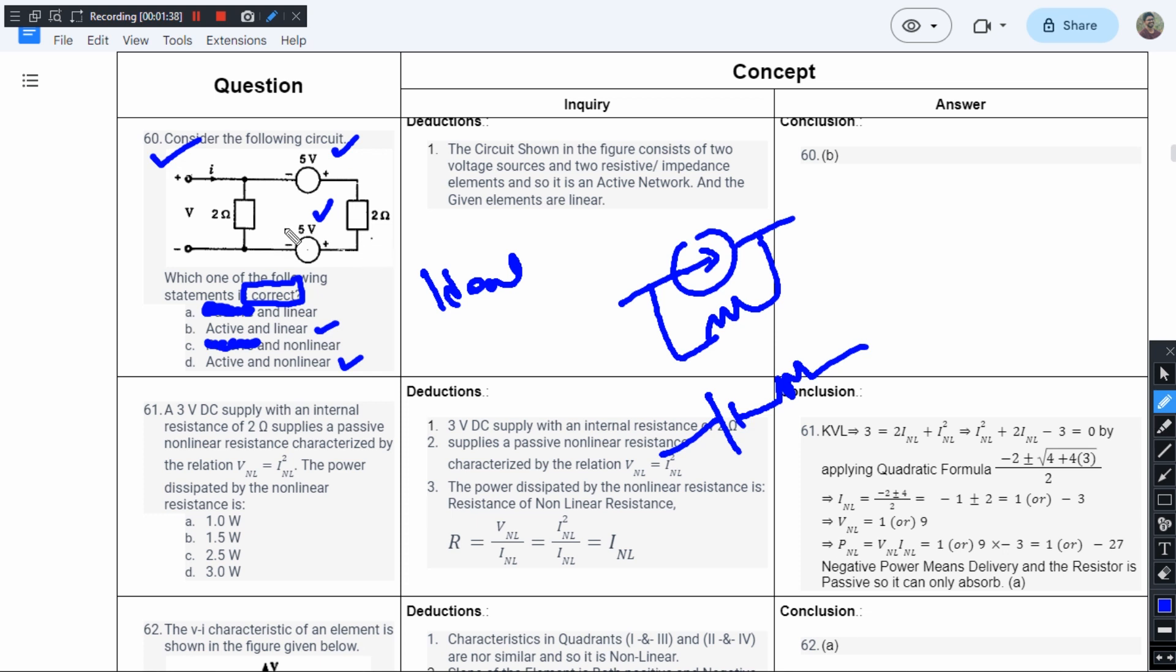Since resistors under constant temperature conditions are linear, and these resistances are getting added to the resistances that are there inside the circuit, the total circuit can be considered as resistive.